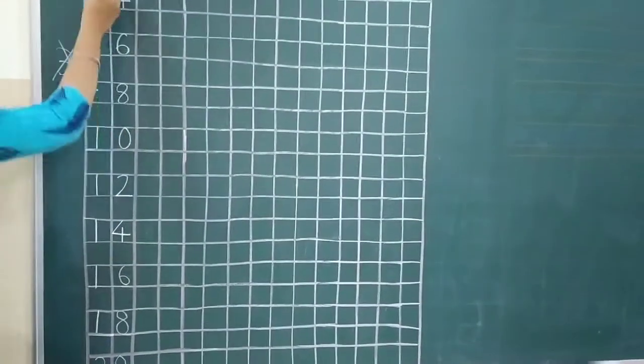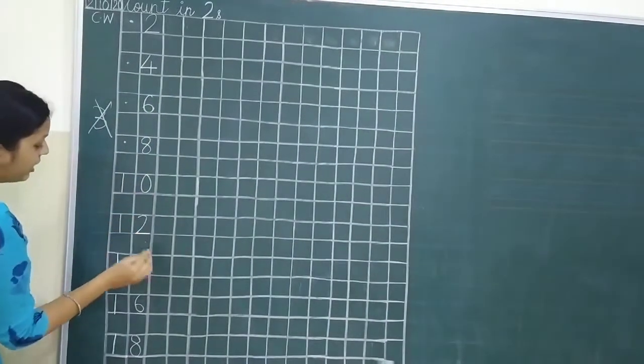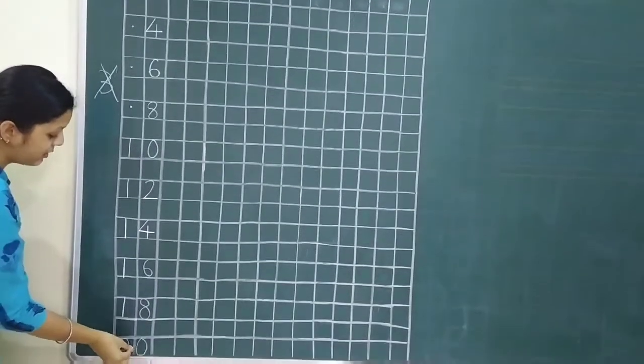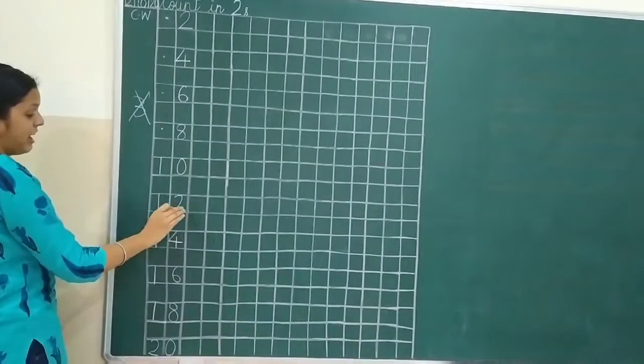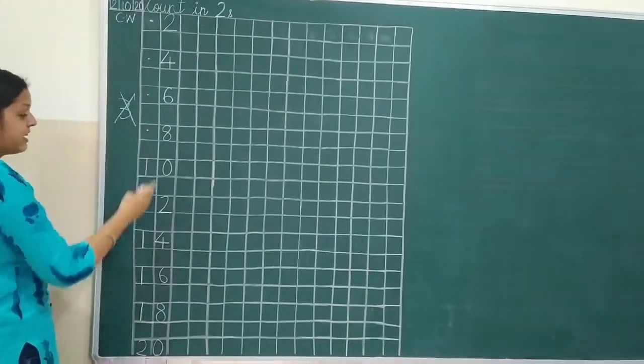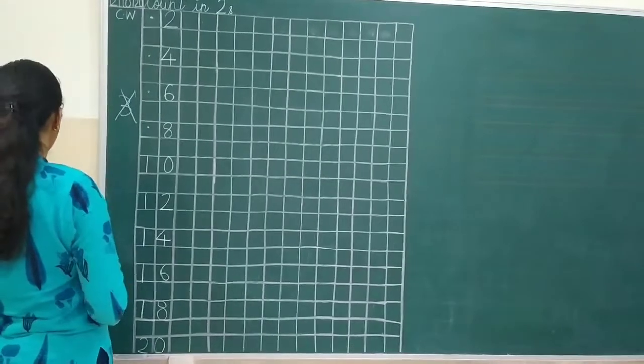So, can you see. 2, 4, 6, 8, 10, 12, 14, 16, 18, 20. In these numbers, we have left some space. Right. So, these are even numbers. Counting 2's.